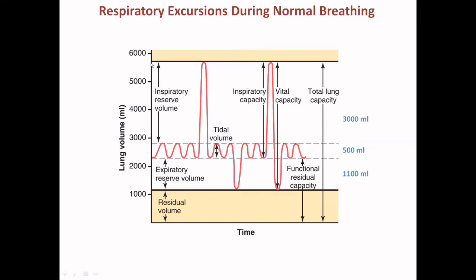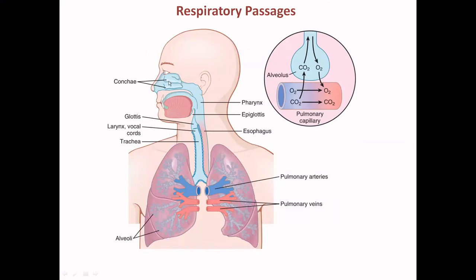Total lung capacity is almost 5.8 liters. The key terminology: tidal volume (normal breathing), inspiratory reserve volume, expiratory reserve volume, residual volume, inspiratory capacity, functional residual capacity, vital capacity, and total lung capacity. Regarding the respiratory passages: from the nasal aperture to the pharynx, then to the glottis, then the larynx or vocal cord, then the trachea, and finally it reaches the alveoli — which are highly vascularized, where exchange of O2 and CO2 takes place.